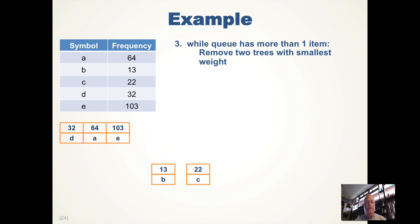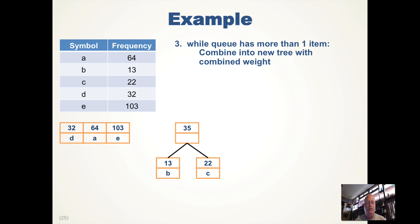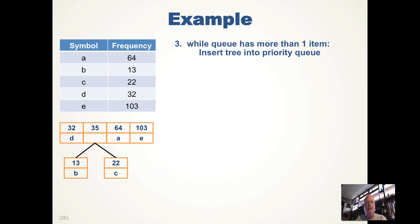We pull the two lowest frequency items out, combine them together into a tree. Notice the tree's weight is the sum of the left subtree and the right subtree. We then insert that tree back into our priority queue.